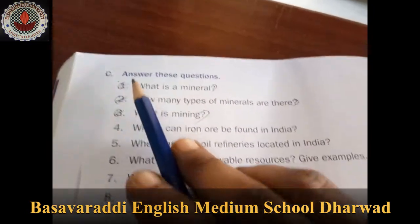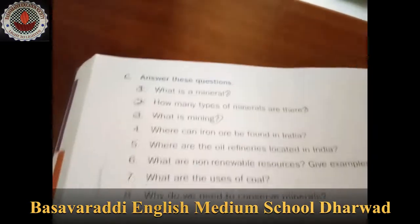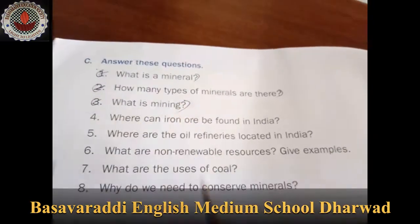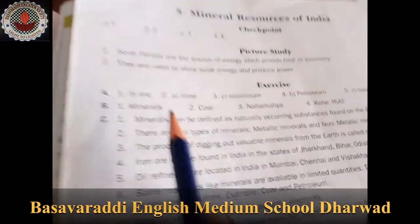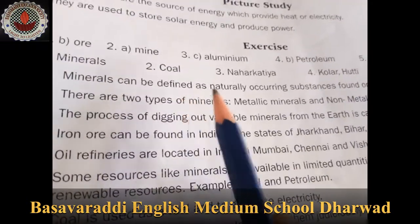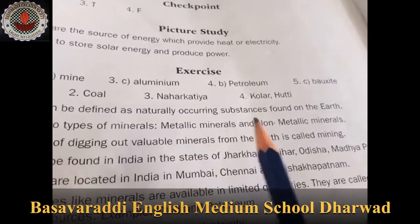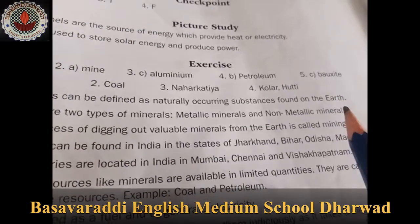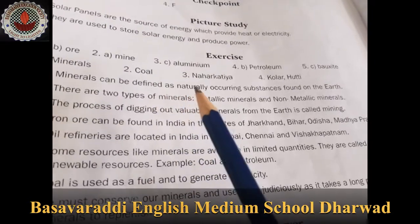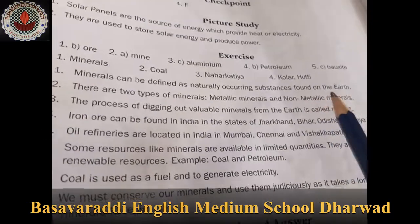Main question C: Answer these questions. Question 1: What is a mineral? Minerals can be defined as naturally occurring substances found on the earth.